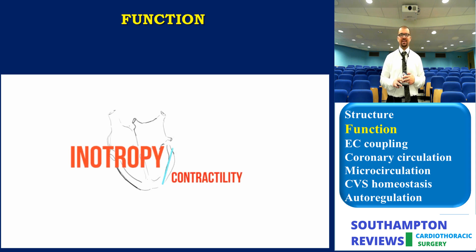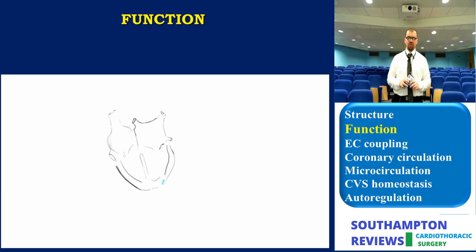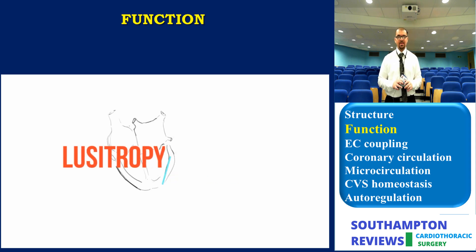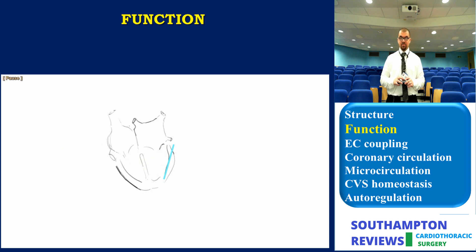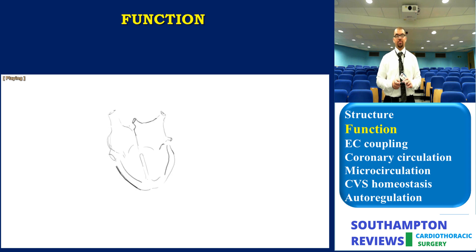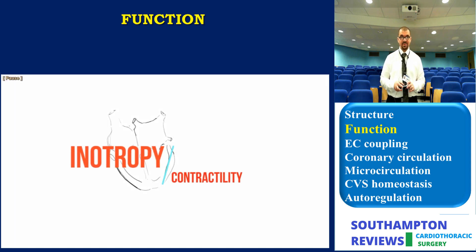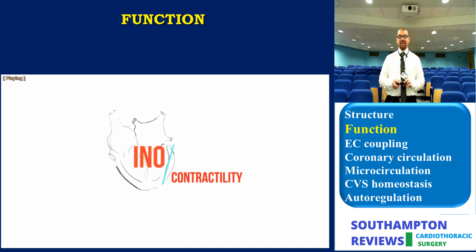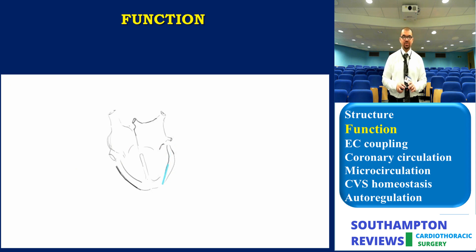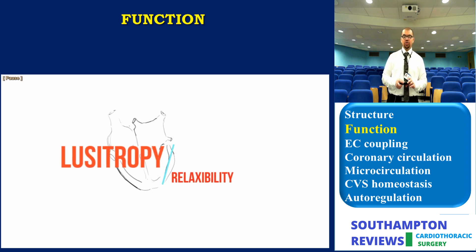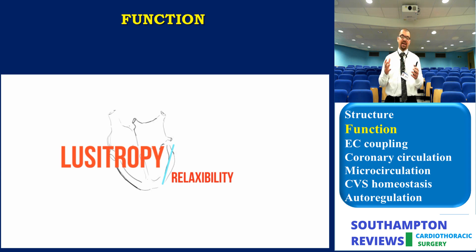Now let's have a look here. The heart muscle is extremely unique in the fact that it possesses five essential properties. The first property is referred to as inotropy, or contractility. The second property is referred to as lusitropy, or relaxability. The heart muscle has to contract and has to relax in order to perform its function.